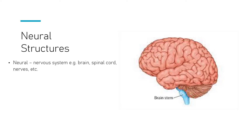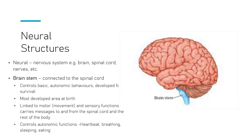Your first bit of terminology: neural structures. The term 'neural' refers to anything to do with the nervous system. The nervous system is anything to do with nerves, feelings, sensations, and senses — that includes the brain, which processes, receives, and sends signals, and the spinal cord, which has lots of cells and nerves. When we talk about neural structures, it's anything to do with the brain, the spinal cord, and the nervous system.